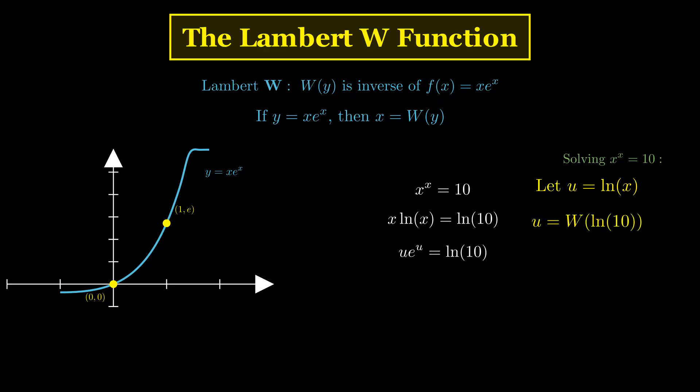Our equation becomes e to the power of u times u equals the natural logarithm of 10. This is exactly the kind of equation that the Lambert W function is designed to solve. Therefore, u equals the Lambert W of the natural logarithm of 10. And since x is e to the power of u, our solution is x equals e to the power of the Lambert W of the natural logarithm of 10.